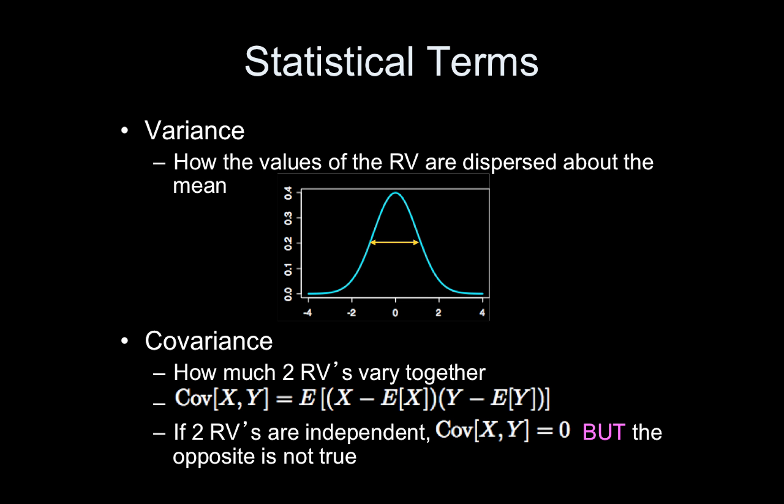So expected value. Variance. You've probably heard variance before. That's how the values of your random variable are dispersed about the mean. So it's just the relationship of the data to the mean. The covariance on the other hand, it's basically a variance but with two random variables considered at the same time. So how do they vary together? I won't say a lot about the covariance now, but when I talk about time series data analysis for fMRI, I will talk more about covariance and correlation.